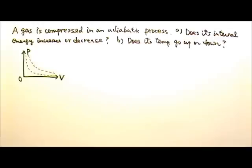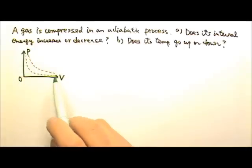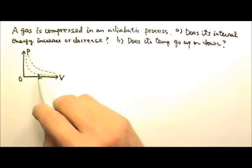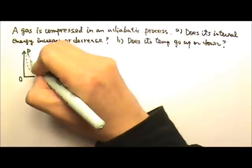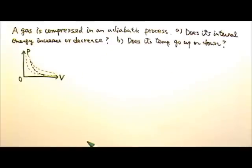There are different ways to answer the questions. One way is to look at the PV diagram. I have here two isothermal curves, and we know that the adiabatic curve is steeper than an isothermal one. So let's say it can be like this, steeper than the isothermal curve.